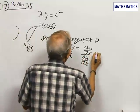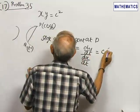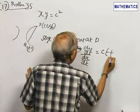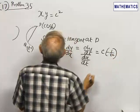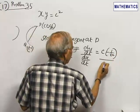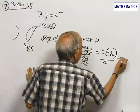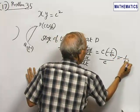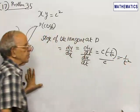That means C times minus 1 by T squared divided by C, that is minus 1 by T squared.